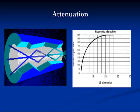Many different problems can cause attenuation of a light signal in optical fiber, including excessive gap between fibers in a connection, improperly installed connectors, impurities in the fiber, excessive bending of the cable, excessive stretching of the cable, and dirt on the connector itself.